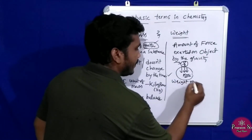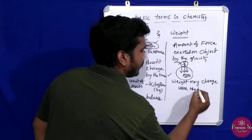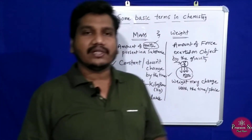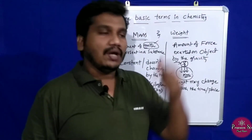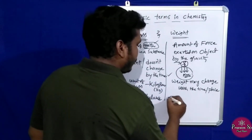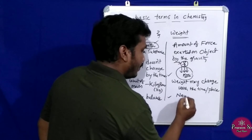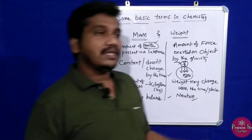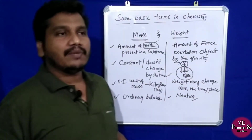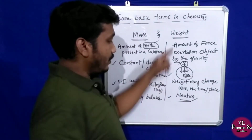Weight may change with time and place due to gravity. The amount of force on an object changes based on location — for example, weight on Earth versus weight in space are different. The SI unit of weight is Newton.